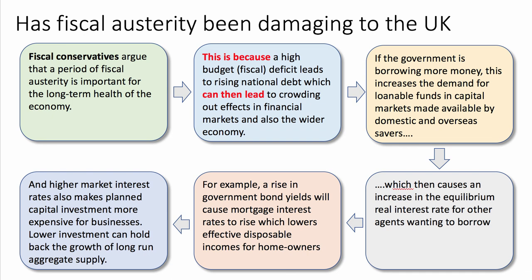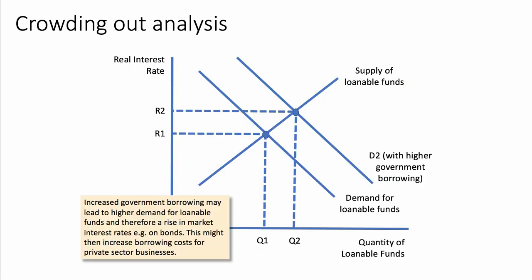Building the reasoning: crowding out occurs because if the government is borrowing more money, this increases the demand for loanable funds in capital markets — made available by domestic and overseas savers — which then causes an increase in the equilibrium real interest rate for other agents wanting to borrow. For example, rising government bond yields will cause mortgage interest rates to rise, which lowers the effective disposable income of homeowners. Higher market interest rates also make planned investment more expensive for businesses, and lower investment could hold back the growth of long-run aggregate supply.